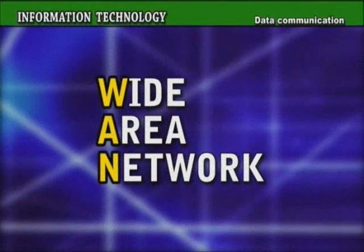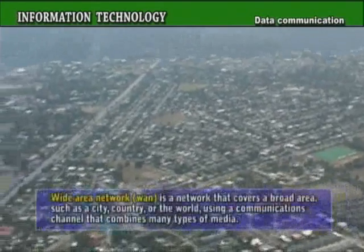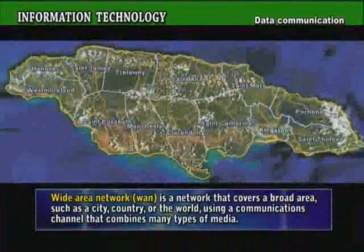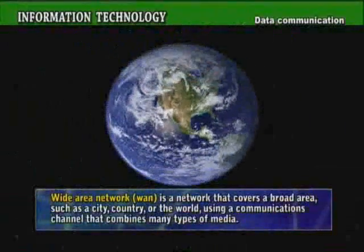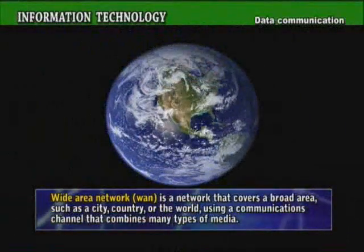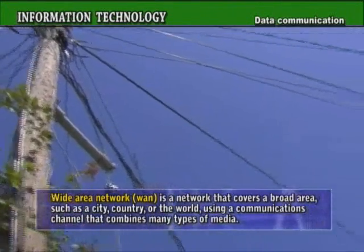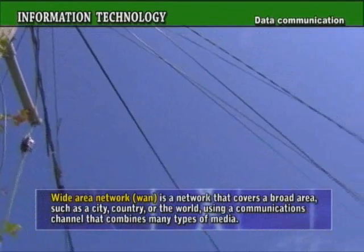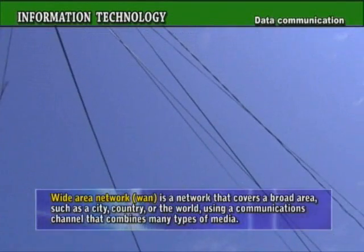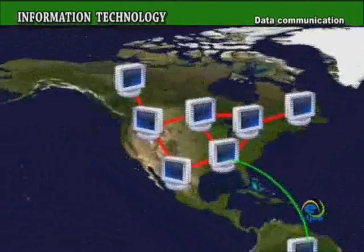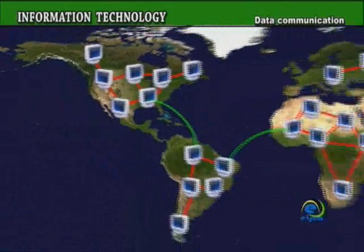Wide Area Network (WAN). A wide area network is a network that covers a broad area such as a city, country, or the world, using a communications channel that combines many types of media such as telephone lines, cables, and radio waves. A WAN can be one large network or can consist of two or more LANs or MANs connected together.